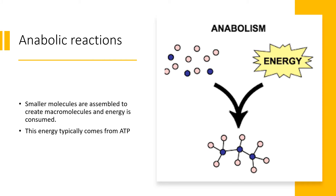Now that we've talked about catabolism, let's shift our focus to anabolic reactions. Anabolic reactions mean that smaller molecules are used to create bigger molecules called macromolecules. Energy is required for this process, and this energy typically comes from ATP.